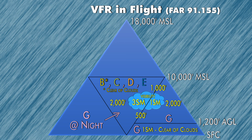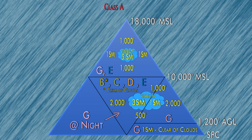Our last triangle is between 10,000 feet MSL and 18,000 feet MSL, and this applies to Class Golf and Echo. If you're up above 10,000 feet MSL, you need at least five statute miles of visibility, 1,000 feet above the clouds, 1,000 feet below the clouds, and one statute mile horizontal clearance from clouds in order for you to be VFR. Above 18,000 feet MSL, we have Class Alpha airspace — no matter what the conditions are, you're only allowed to operate by IFR flight rules, so there is no triangle up there.